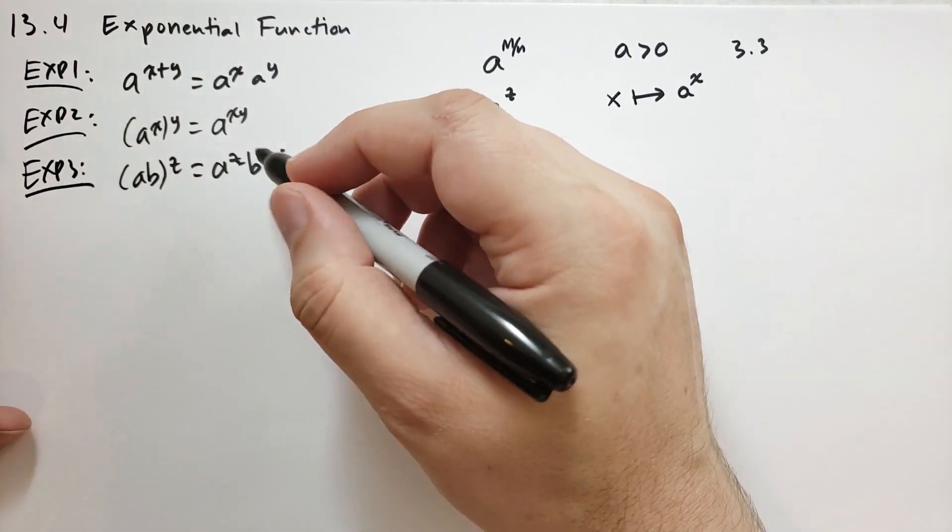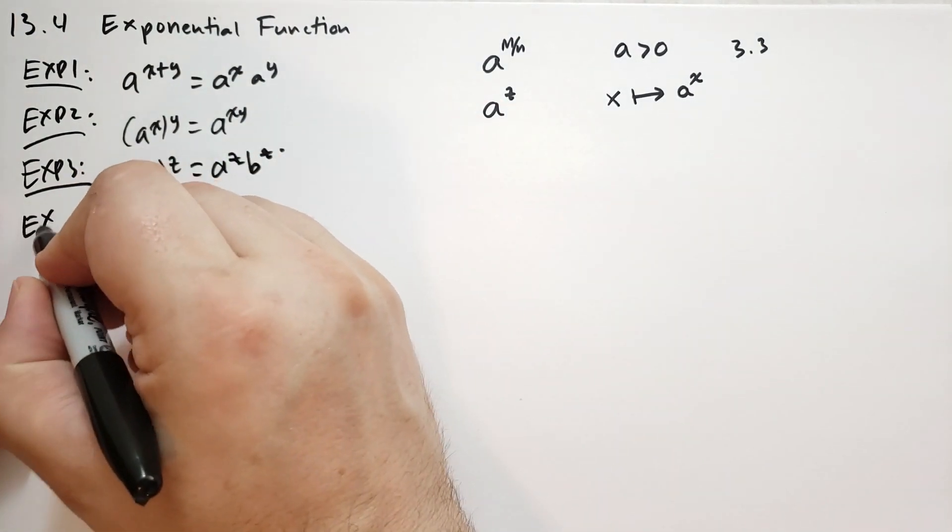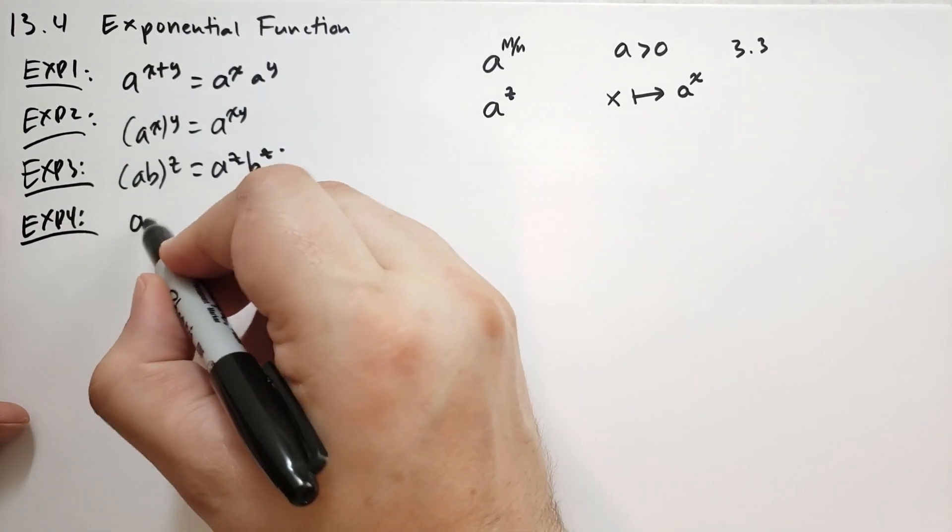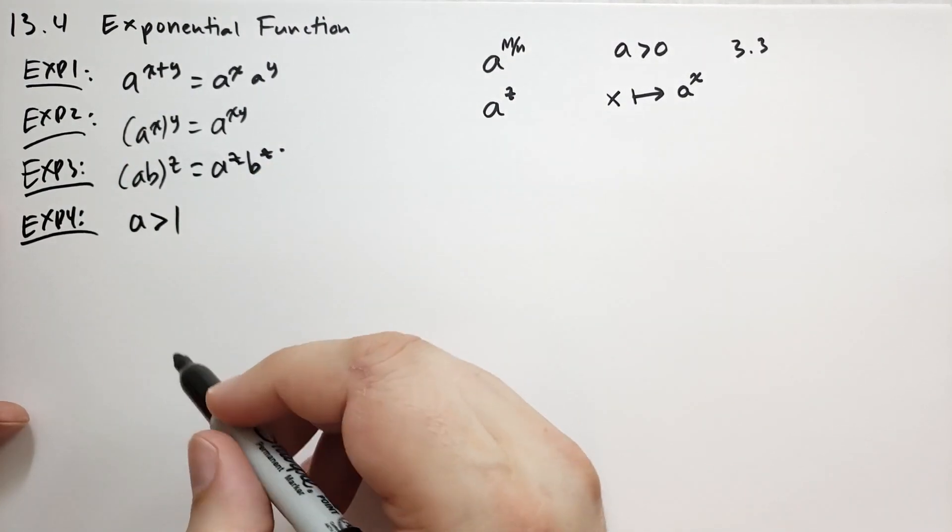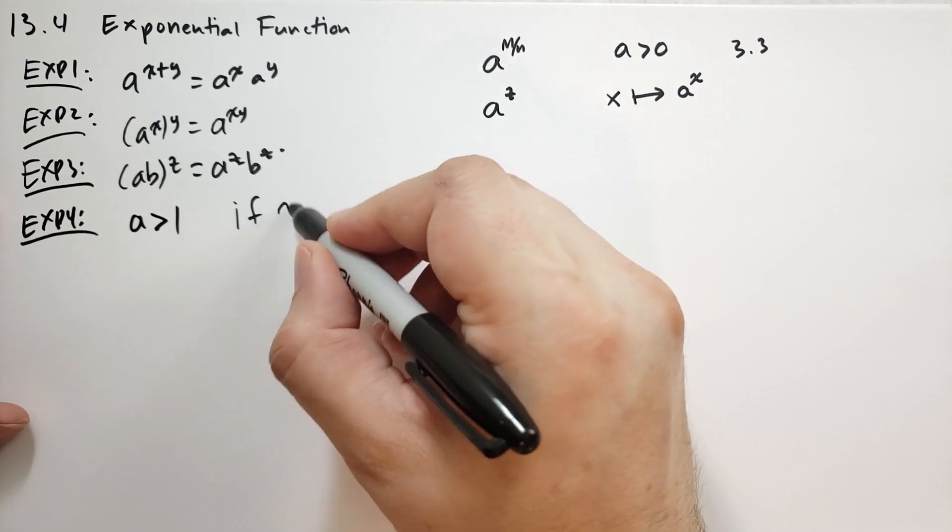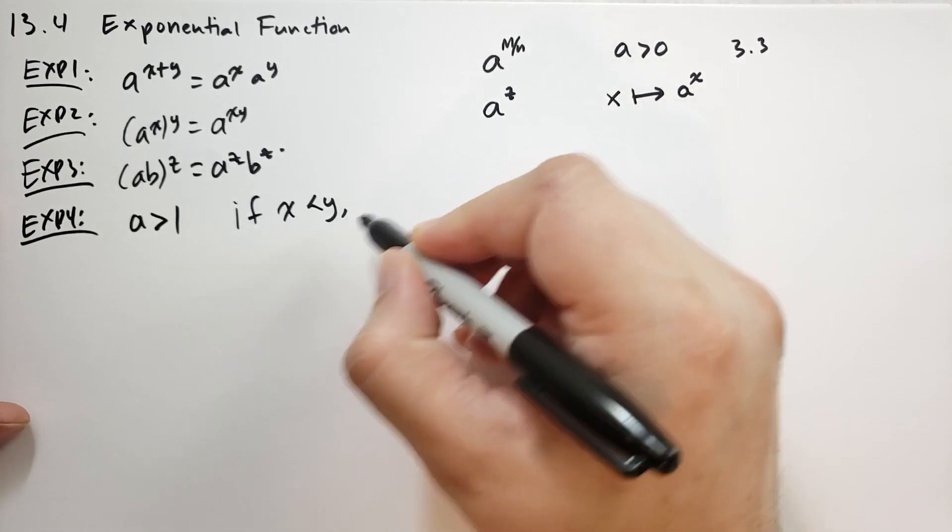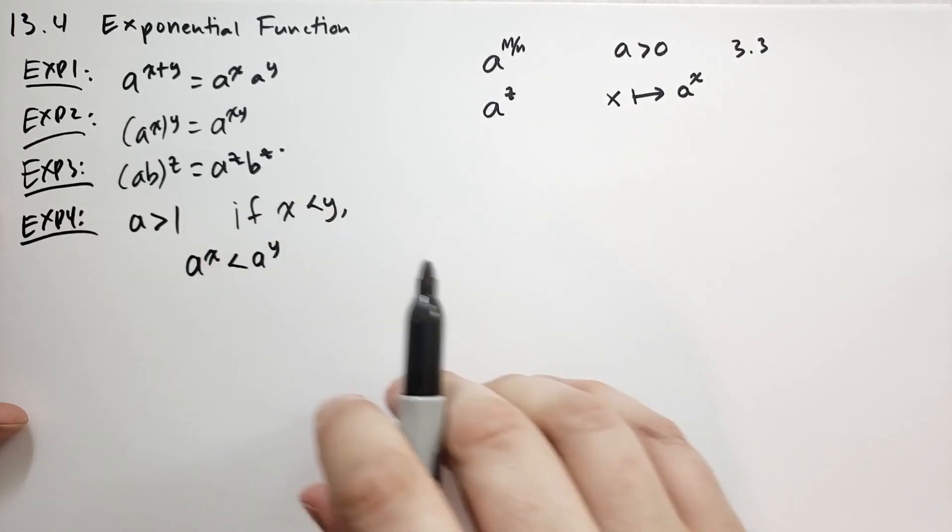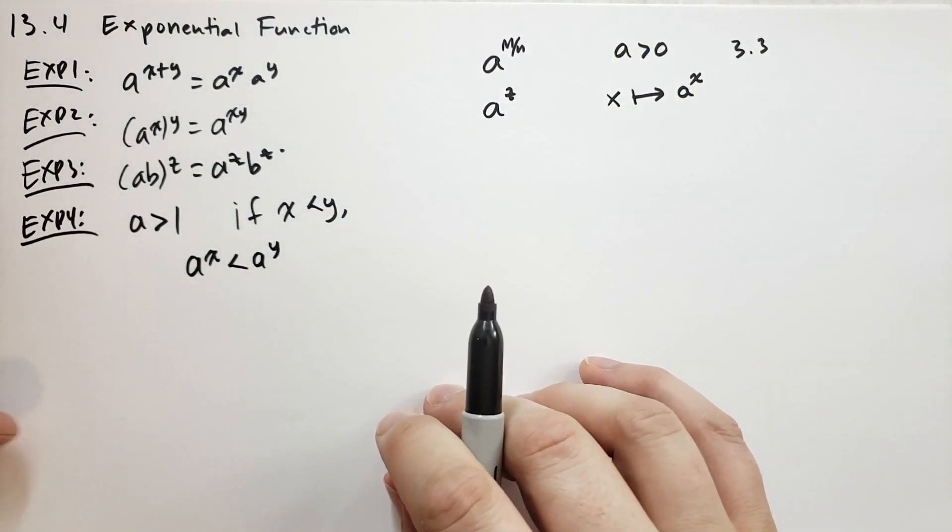And then finally we have EXP4. EXP4 says that when a is greater than 1, and if x is less than y, then a^x is also less than a^y.